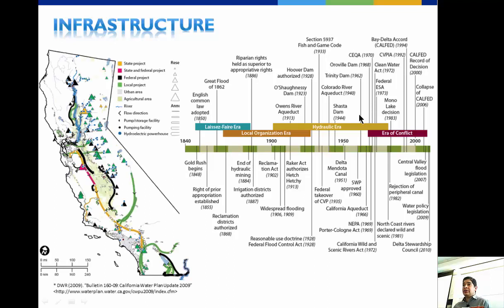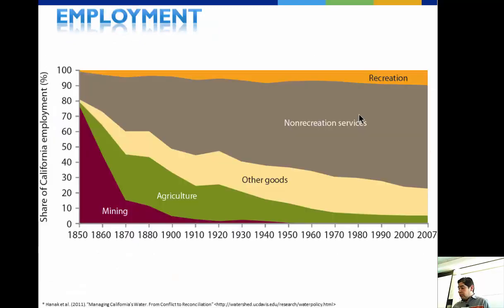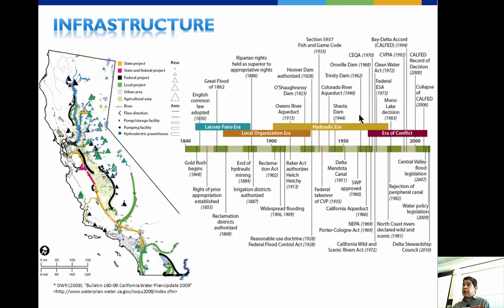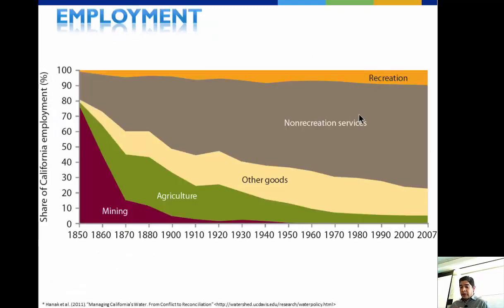Since John Marshall's discovery of gold and Sutter's Mill, California's destiny has been tied to water. At the creation of the state, most employment was related to mining. As the Gold Rush decreased, agriculture took on much of the employment. Right now, most employment is non-agriculture-related, but water remains central to the state's economy and development.